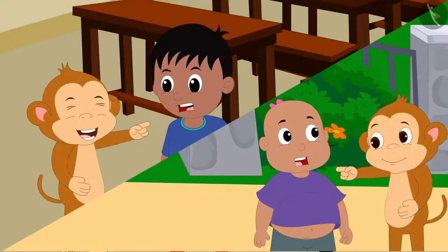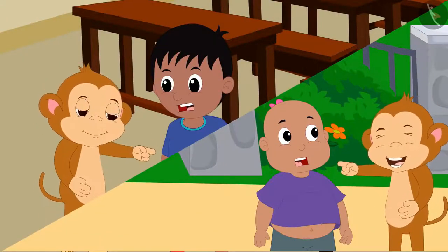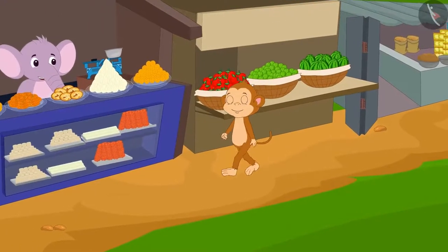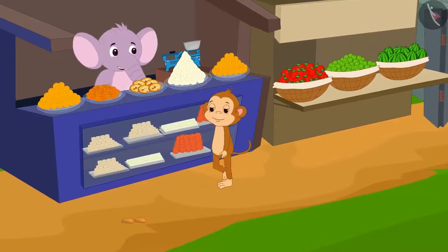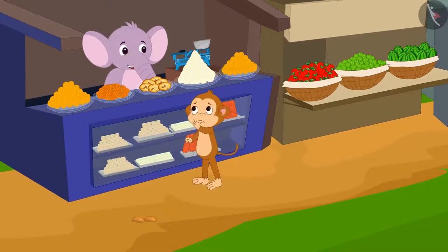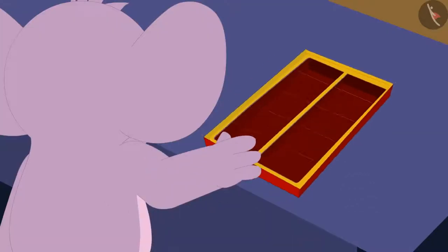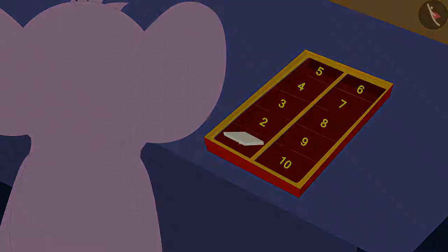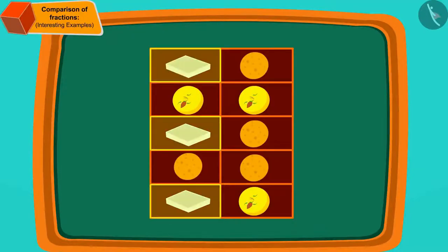Babban does a lot of mischief with all the people in the village. Today he has come to buy sweets at Appu's sweet shop. He could not decide which sweets he wants to buy, so Appu divided the sweet box into 10 equal parts. Now Appu put kaju katli, laddu and peda in the sections in this way.